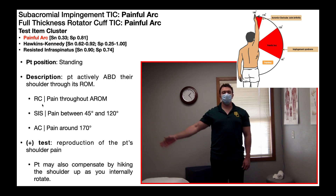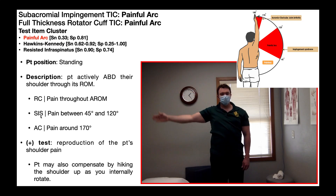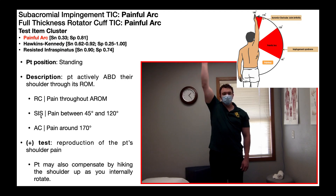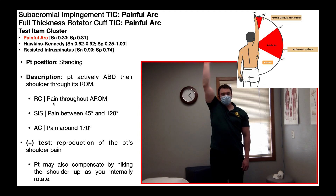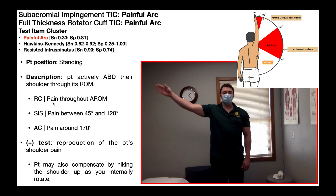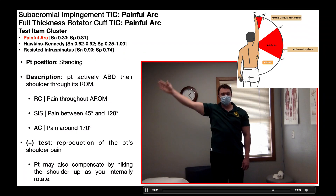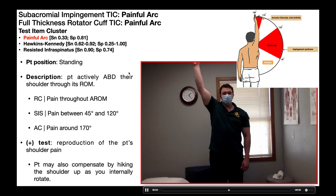This test is also useful because it can help you differentiate between a rotator cuff tear and subacromial impingement syndrome. This is not a hard and fast rule, but it seems to be pretty widespread among patients. If somebody has a true rotator cuff tear, the entire active range of motion of abduction will be painful — it'll be painful from 45 to 120 degrees, but also from 0 to 45, meaning that entire active range of motion is going to be painful.